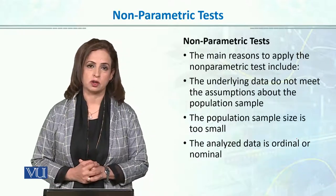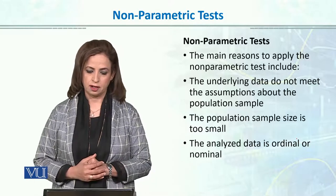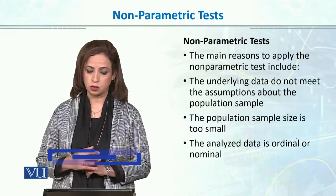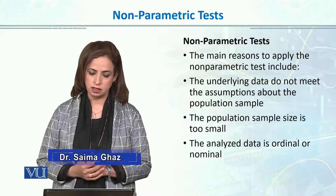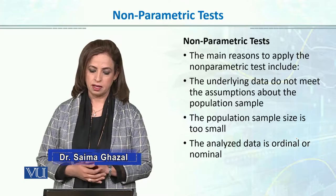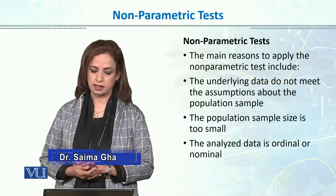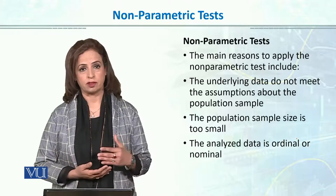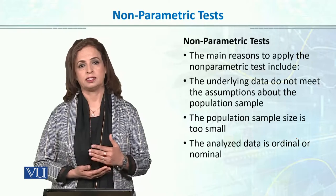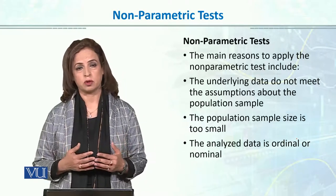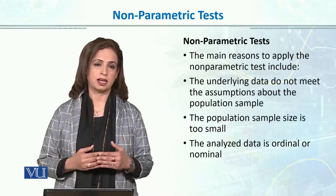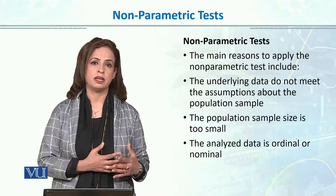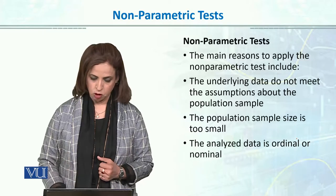So the alternative choice for us is non-parametric testing. The main reasons to apply non-parametric tests include: the underlying data do not meet the assumptions about the population sample, the sample size is too small, or the data is ordinal or nominal. If our level of measurement is ordinal or nominal, or our sample size is very small, or we cannot meet parametric testing assumptions in any way, then our choice would be to test the hypothesis using non-parametric testing.